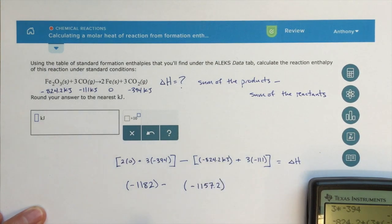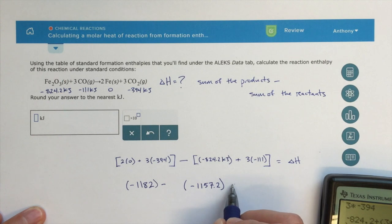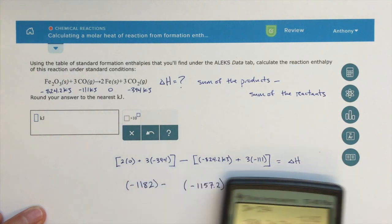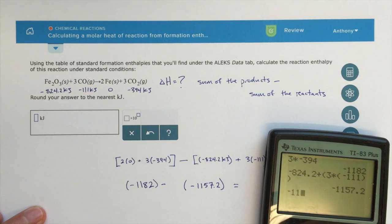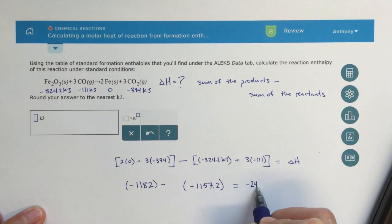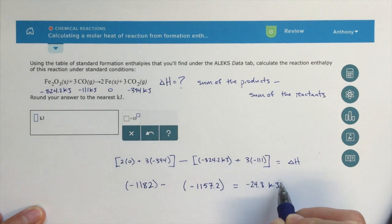So that's the sum of my energies of my products. And now I'm looking for the difference here. So now this is a minus and then a plus. So I'm going to essentially be adding those together. So minus 1182, and then minus, the answer is a minus 24.8 kilojoules.